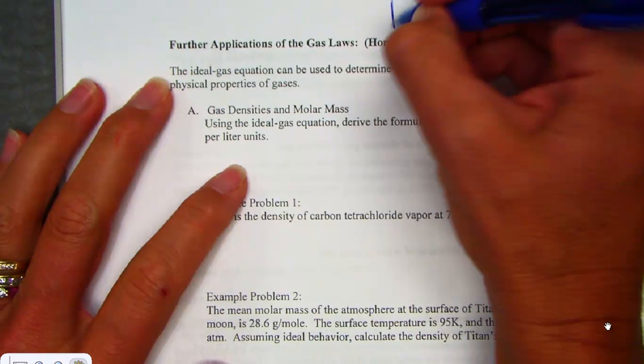Really hidden inside of our PV equals nRT equations, we start to see other units we'll be able to solve for.